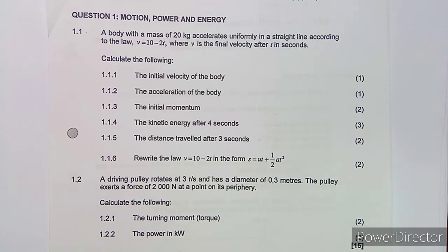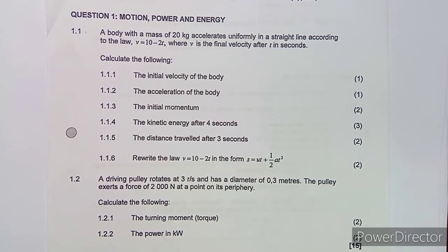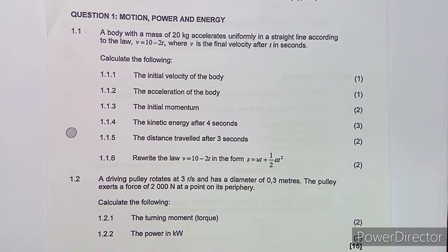We have Question 1, worth a total of 15 marks. We are given in part 1.1 that a body with a mass of 20 kg accelerates uniformly in a straight line according to the law v = 10 − 2t, where v is the final velocity after t seconds.